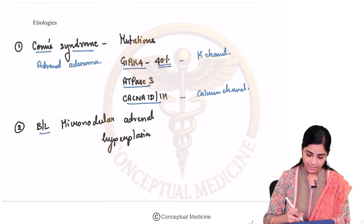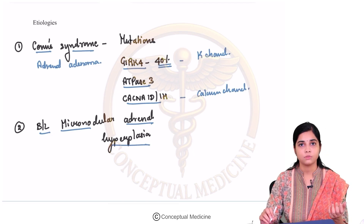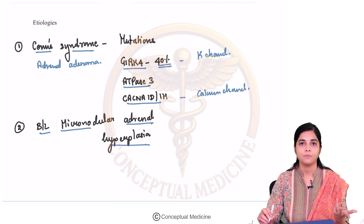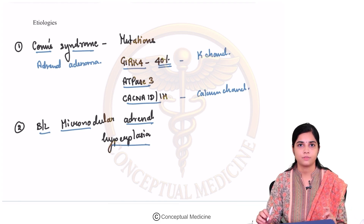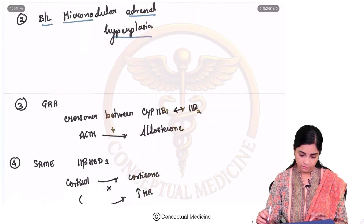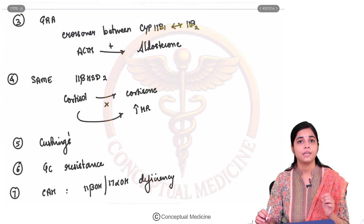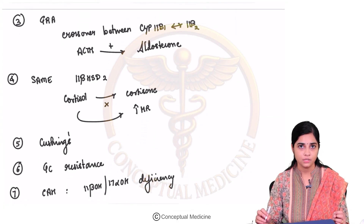Then bilateral micronodular adrenal hyperplasia — due to unknown reasons, there is adrenal hyperplasia of micronodular type which can result in the production of aldosterone. The other causes are rarer causes for Conn's syndrome.